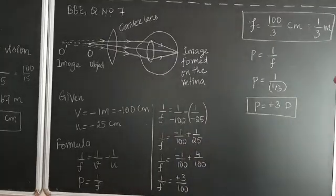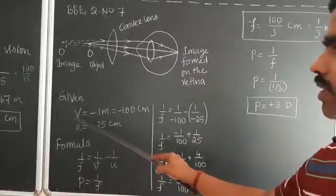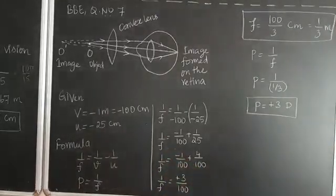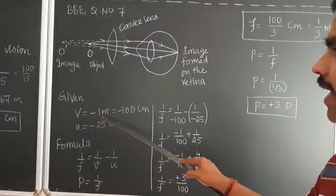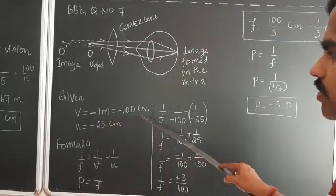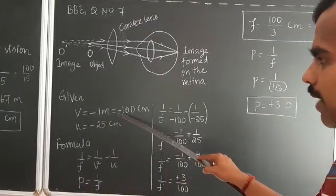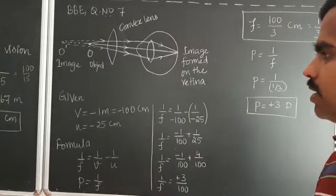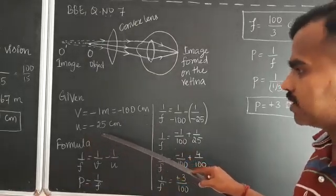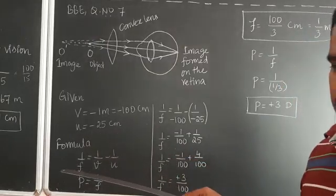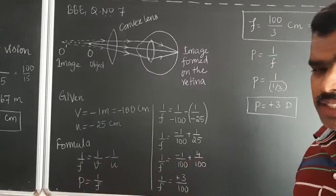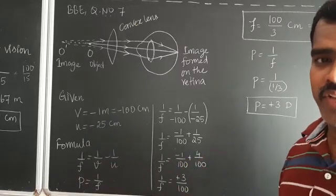Were they given the problem? Yes, they given far point. V they given as minus 1 meter, minus 1 meter here I converted in terms of centimeter. Therefore, I wrote minus 100 centimeter and they also given U is equal to minus 25 centimeter. The minimum distance they given as 25 centimeter. U should be always minus as we know that. I hope we are familiar with that.